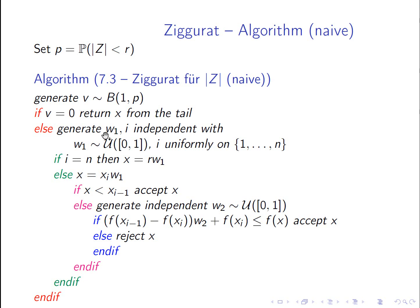So else, well, then we are on the base. We generate w_1, i independently. So i is uniformly on one to n. So a discrete uniform distribution. And w_1 is the realization of a uniformly distributed random variable on 0, 1. So if i is equal to n, then we just set x equal to r times w_1, as we have seen.